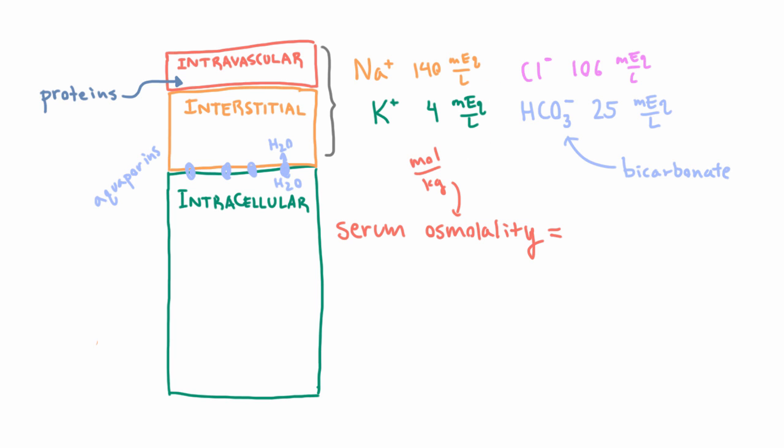But actually you can simplify it a little bit. So one thing you can do is say, well I know that there's an equal number of negative and positive charges. So I can just add up the positive charges and multiply by two and that should account for the negative charges as well.